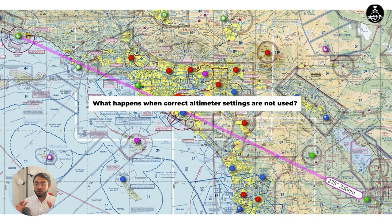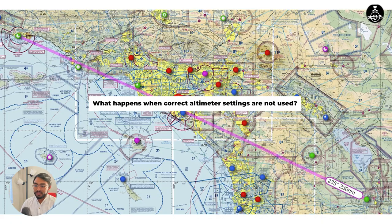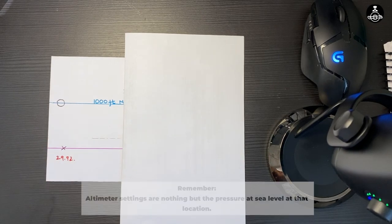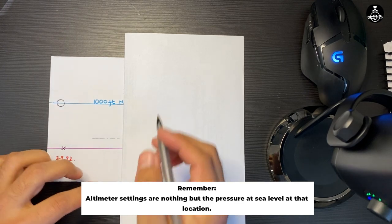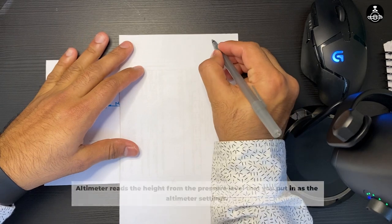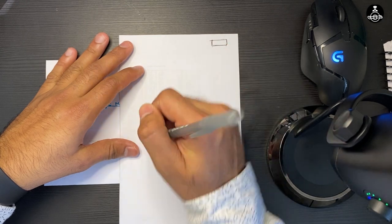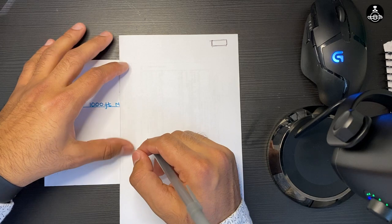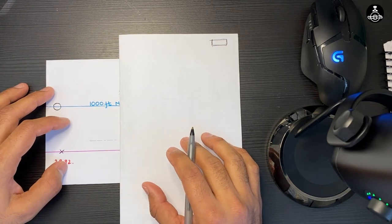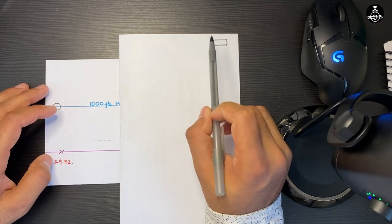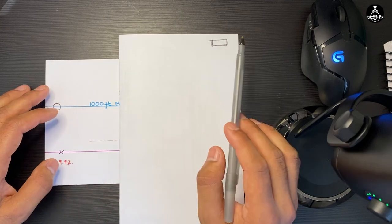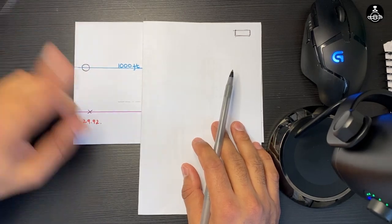So now, what would happen if you're flying a 300 nautical mile cross-country, squawking VFR, not in radar contact, not talking to ATC, and also not listening to nearby ATIS or ASOS to get the altimeter settings? Let's take a look at how this plays out using our overhead camera. One thing to remember is that the altimeter reads the height from whatever you put in as the altimeter settings — whether from ATIS, ASOS, or a weather report — that's what you put into the Kollsman window, and the altimeter reads the height from that pressure level.